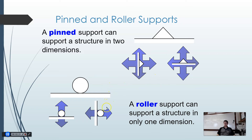A roller support allows motion in one direction and prevents it in the other. If you push on the sides of the wheel it would roll, so it provides no support in that direction. But if you push directly down, it provides vertical support. Just like the pin, we can orient it horizontally to provide vertical support, or position it to provide horizontal support.